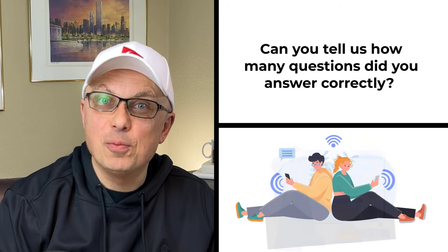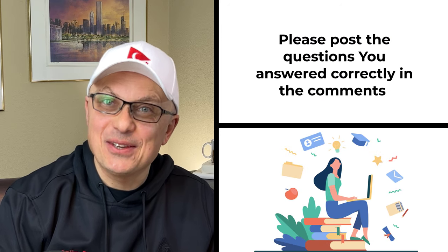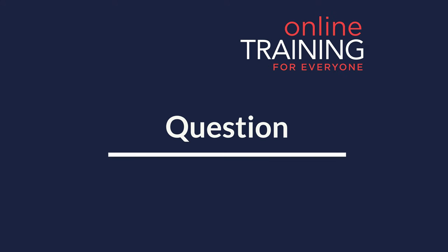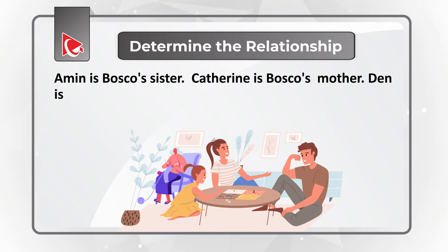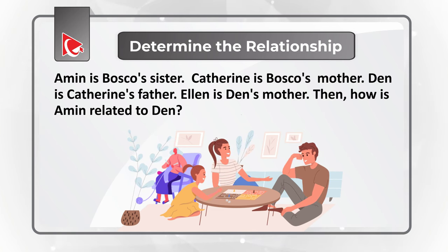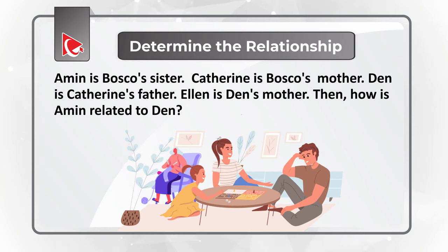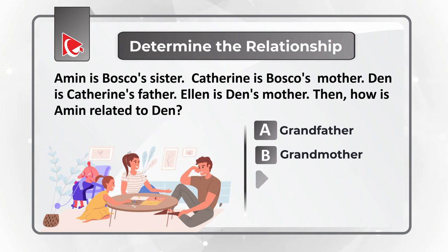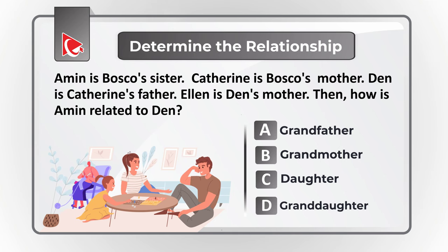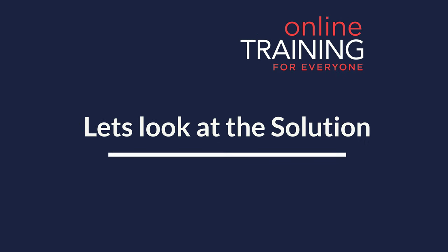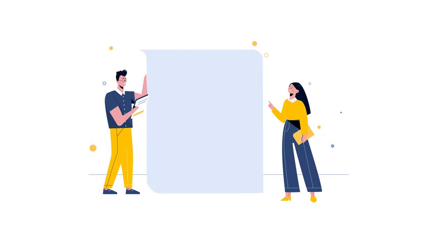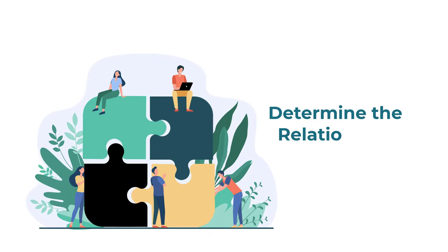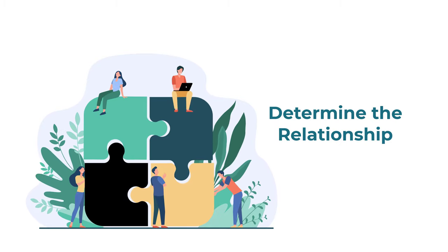How many questions did you answer correctly? Post in the comments! Now here's an interesting challenge where you need to determine relationships between family members. Amin is Baska's sister, Catherine is Baska's mother, Dan is Catherine's father, and Alan is Dan's mother. You need to determine how Amin is related to Dan. Choices: A) grandfather, B) grandmother, C) daughter, D) granddaughter. The easiest way is to build a diagram.